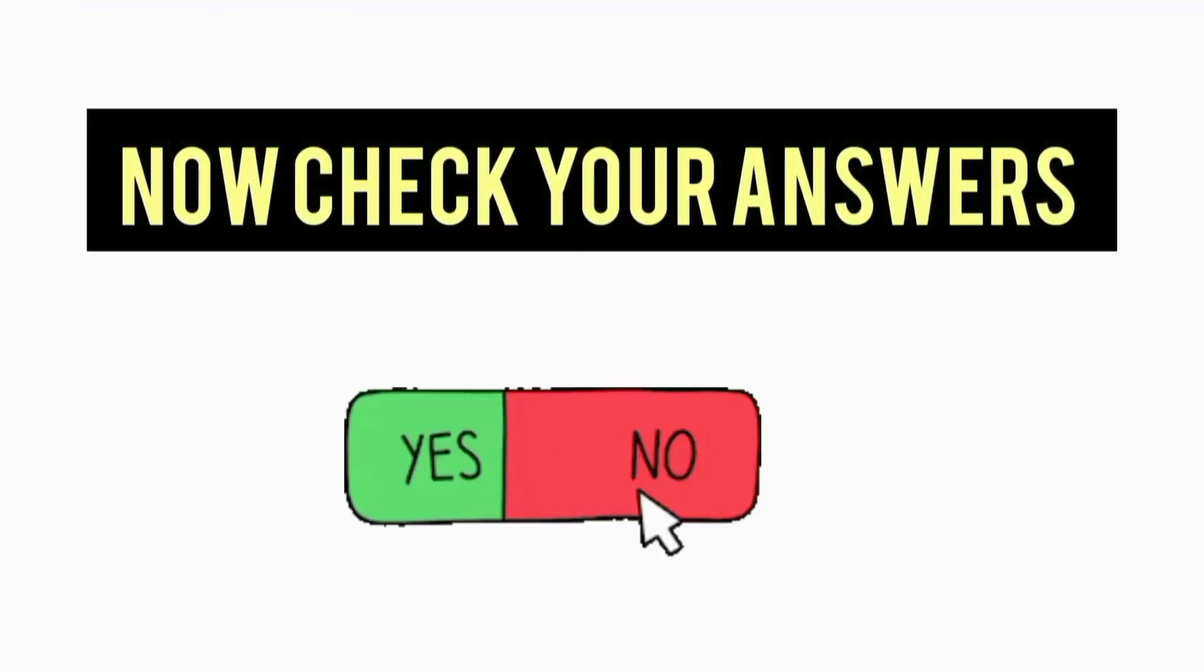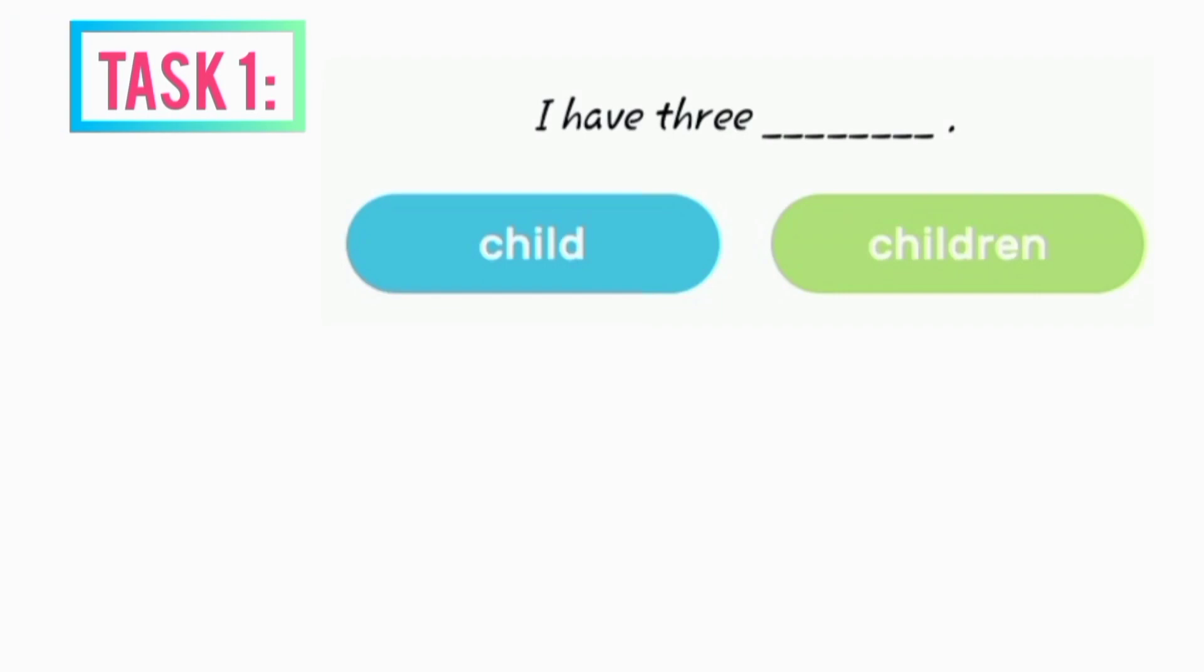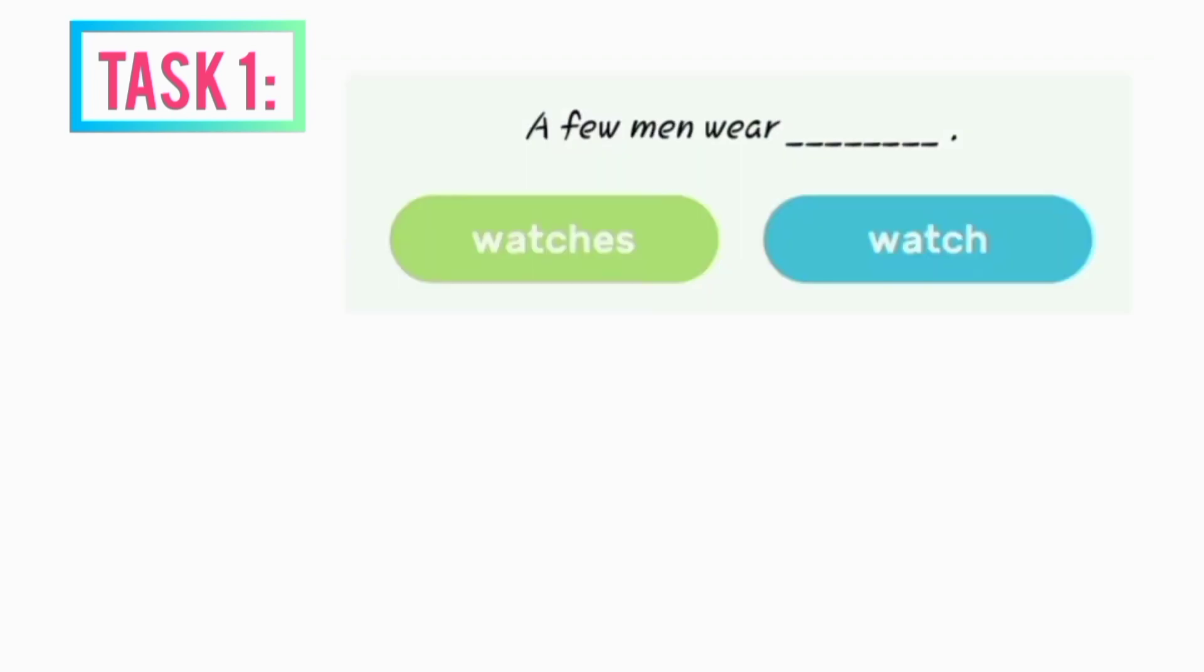Now let's check your answers. Task one: I have three children. I put two big potatoes in the lunch box. A few men wear watches. I saw a mouse running by.